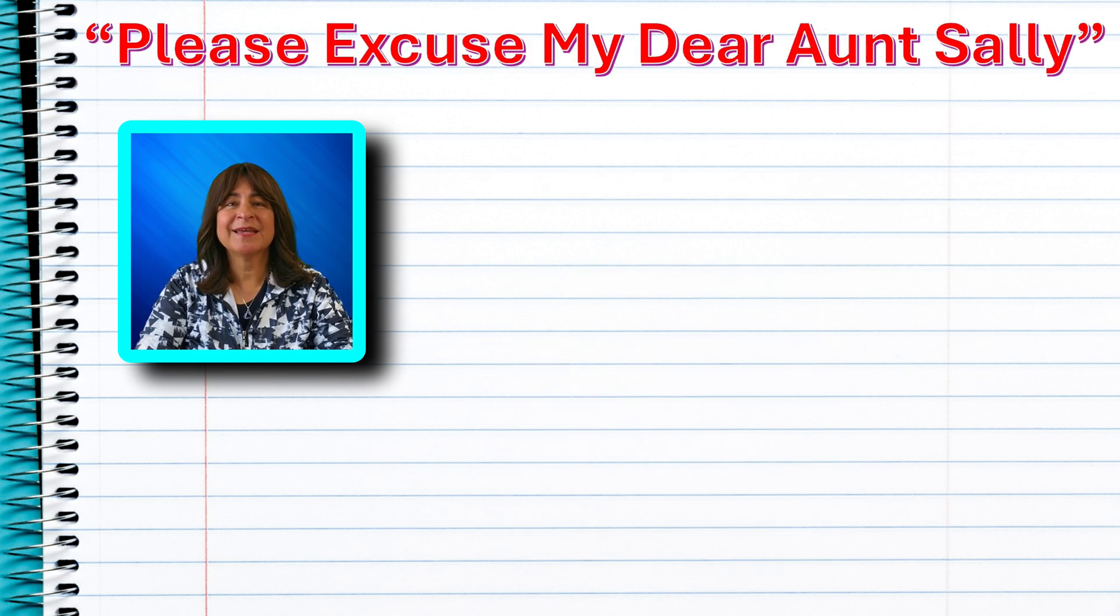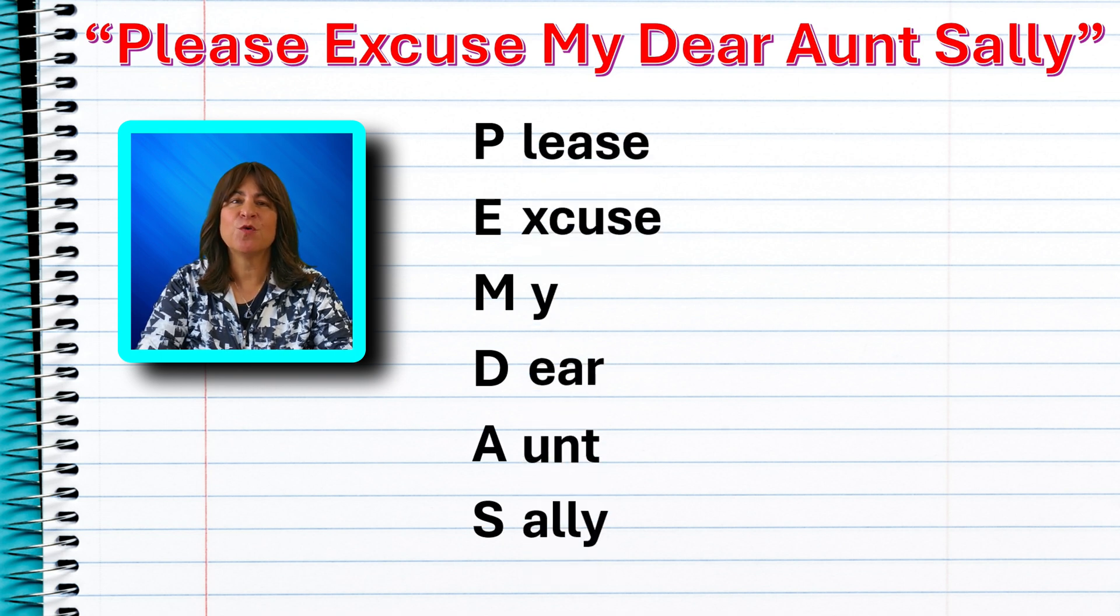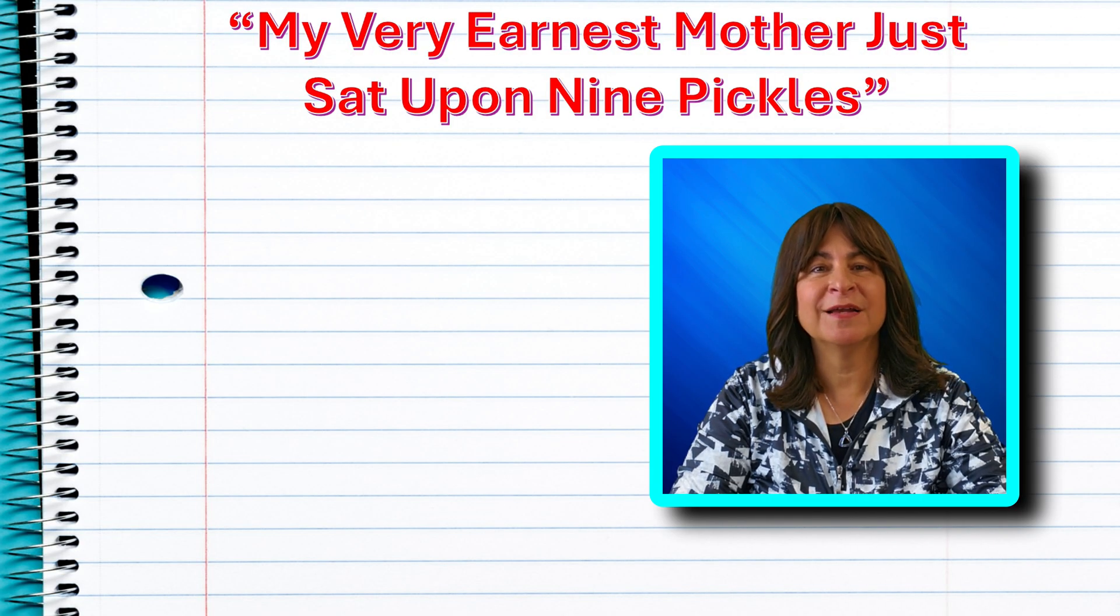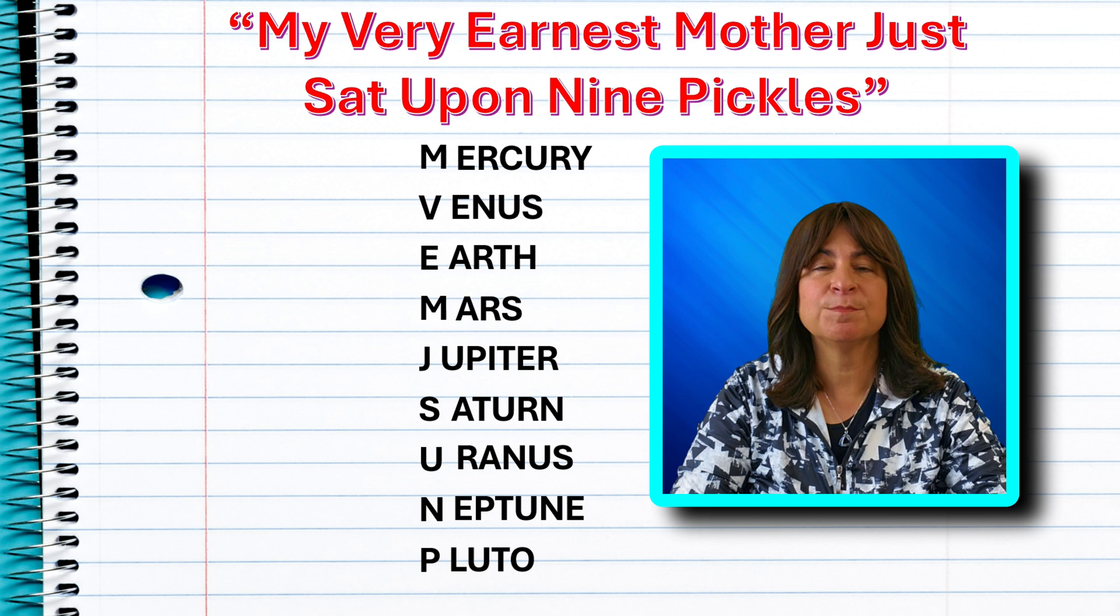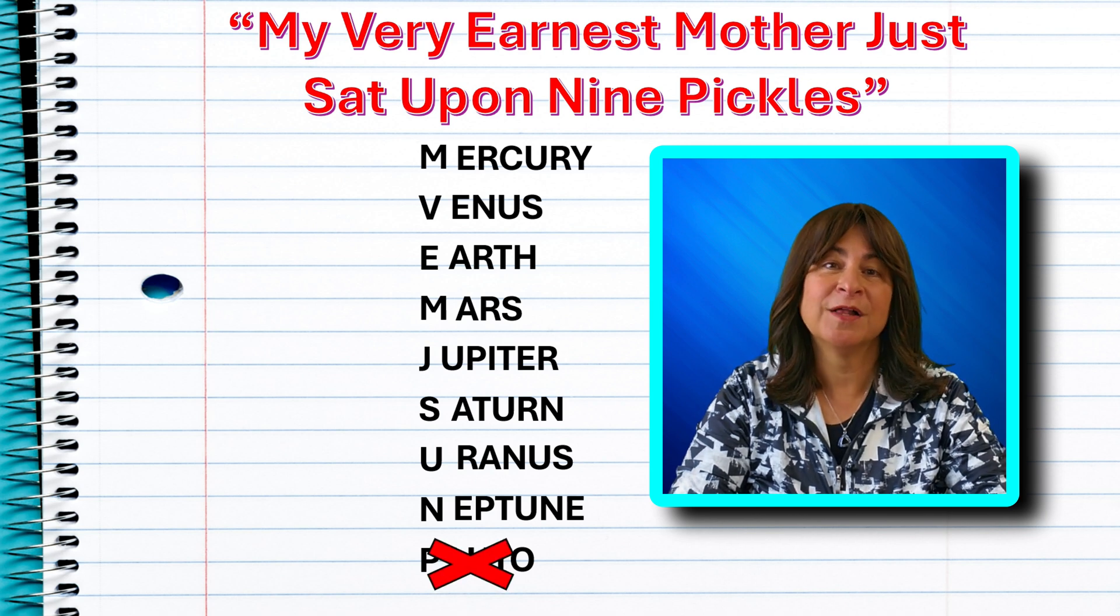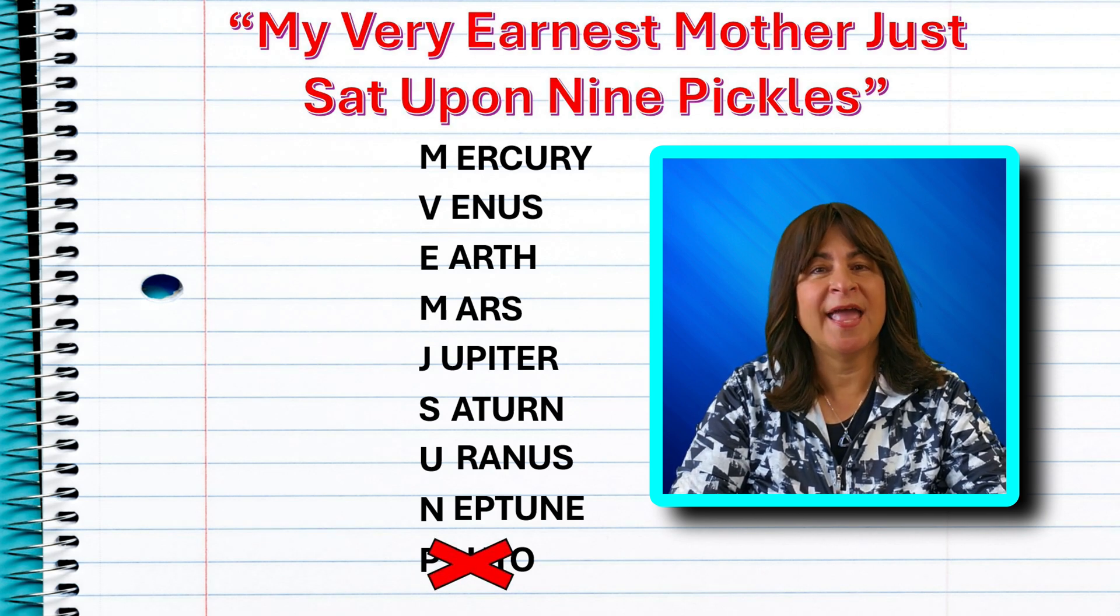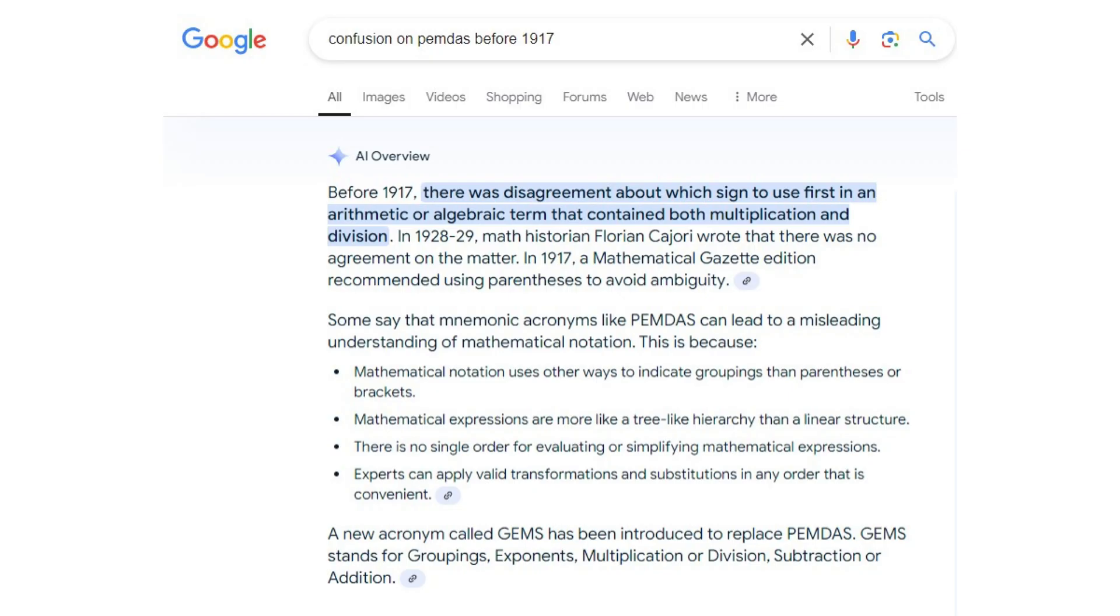In my day back in grade school, we learned the mnemonic, please excuse my dear aunt Sally, which of course, if you take the first letter of each of those words, we have PEMDAS. Back then we didn't have Google machines, so learning mnemonics was the way to go. And I think it still is or ought to be. Of course, we also learned the mnemonic, my very earnest mother just sat upon nine pickles for the order of the planets from the sun, but that doesn't work anymore since Pluto has lost its status as a planet. Oh well, but PEMDAS still works and it should work forever. Or will it?